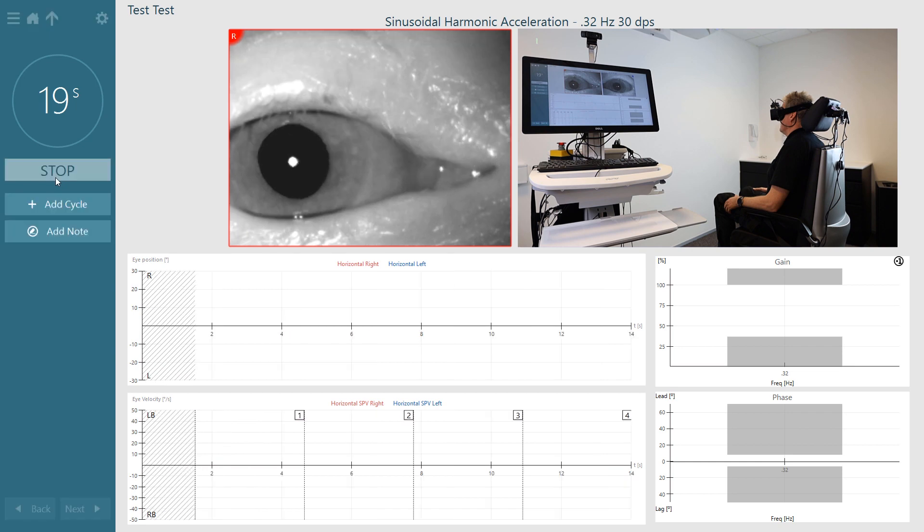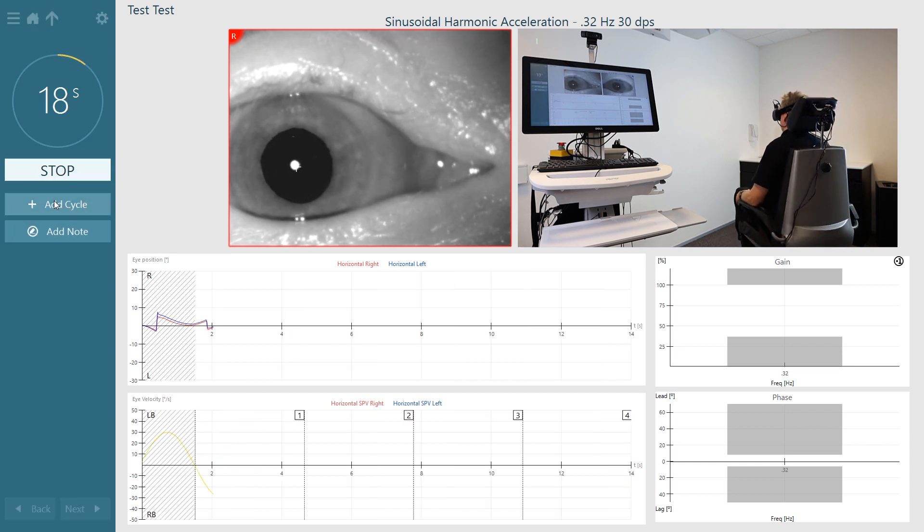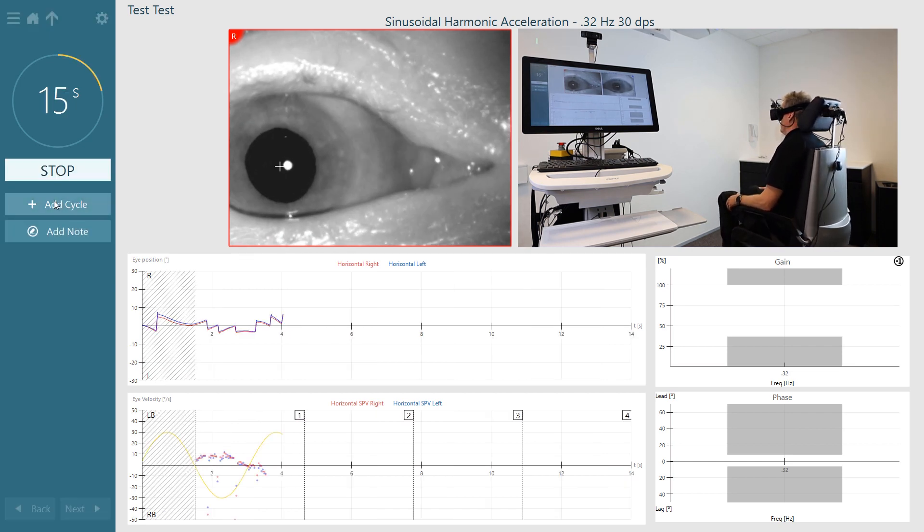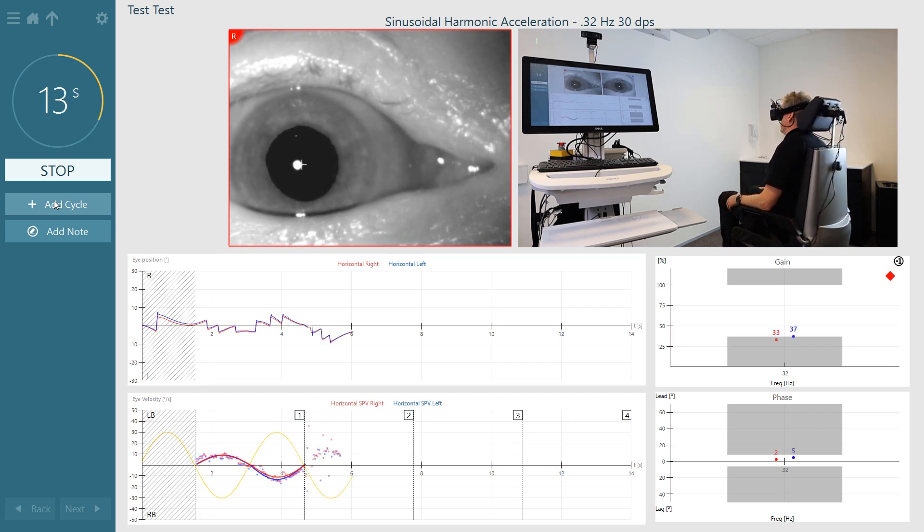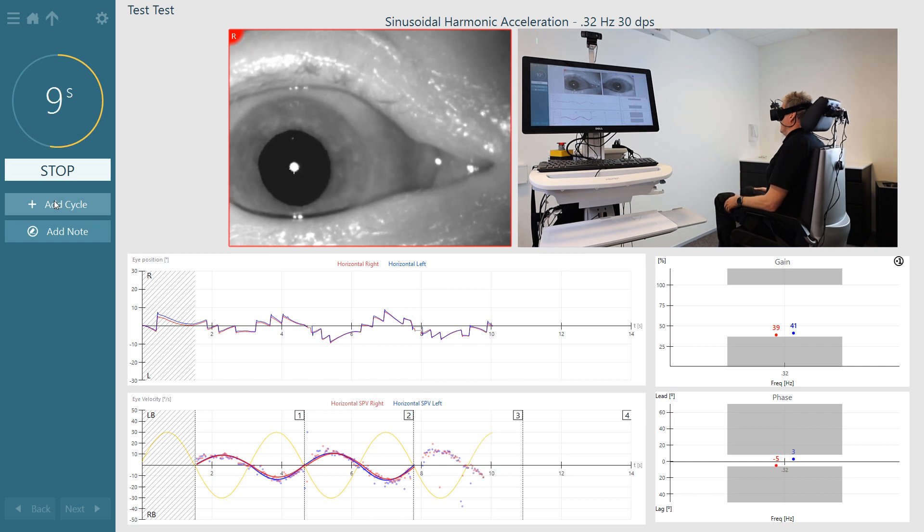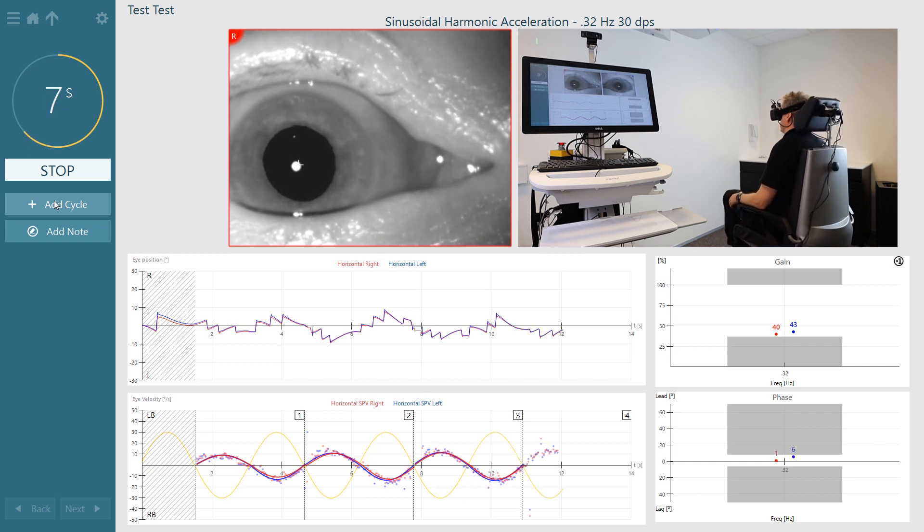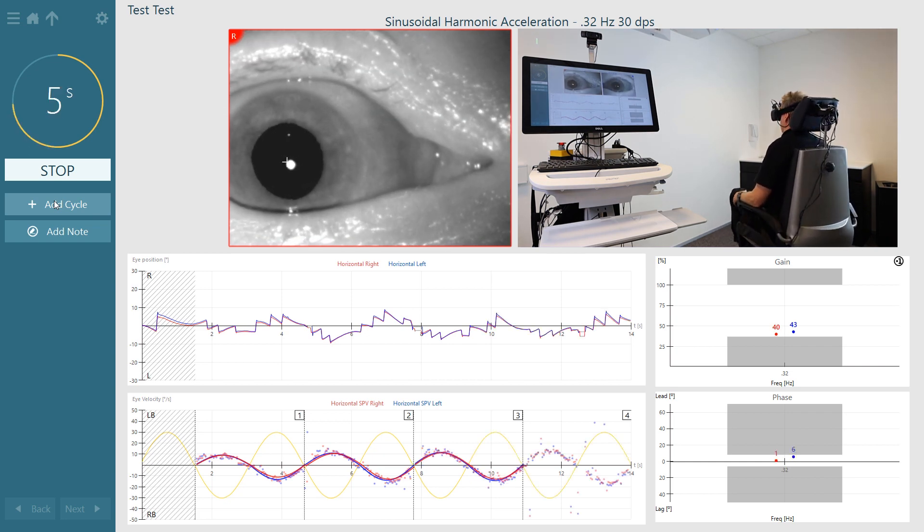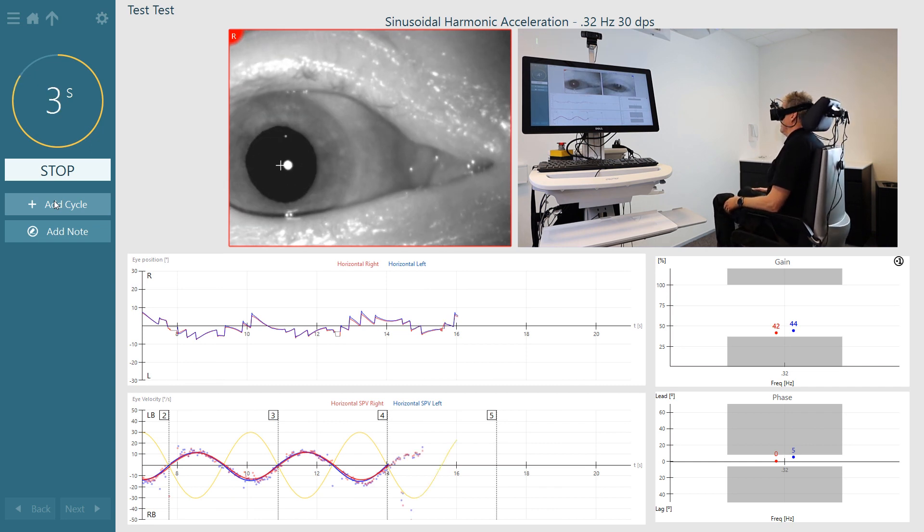VOR Suppression Testing actually starts with Sinusoidal Harmonic Acceleration. VOR Suppression Testing is also known as the Visual Vestibular Fixation, VOR Fixation or VOR Cancellation.